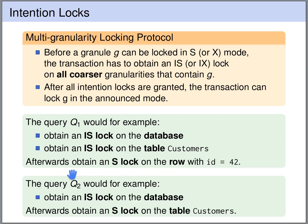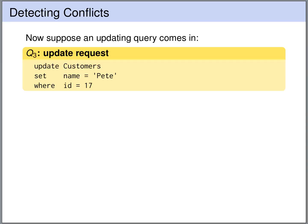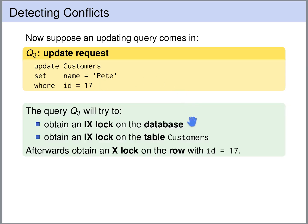For our second query, which scanned the entire customers table, it would first need to obtain an intention shared lock on the database, and once granted, it can obtain a shared lock on the table customers. Now suppose a third query comes in — an updating query that wants to update the name of the customer with ID 17. It first needs to obtain an intention exclusive lock on the database and an intention exclusive lock on the table customers, and if both are granted, it obtains an exclusive lock on the row with ID 17.